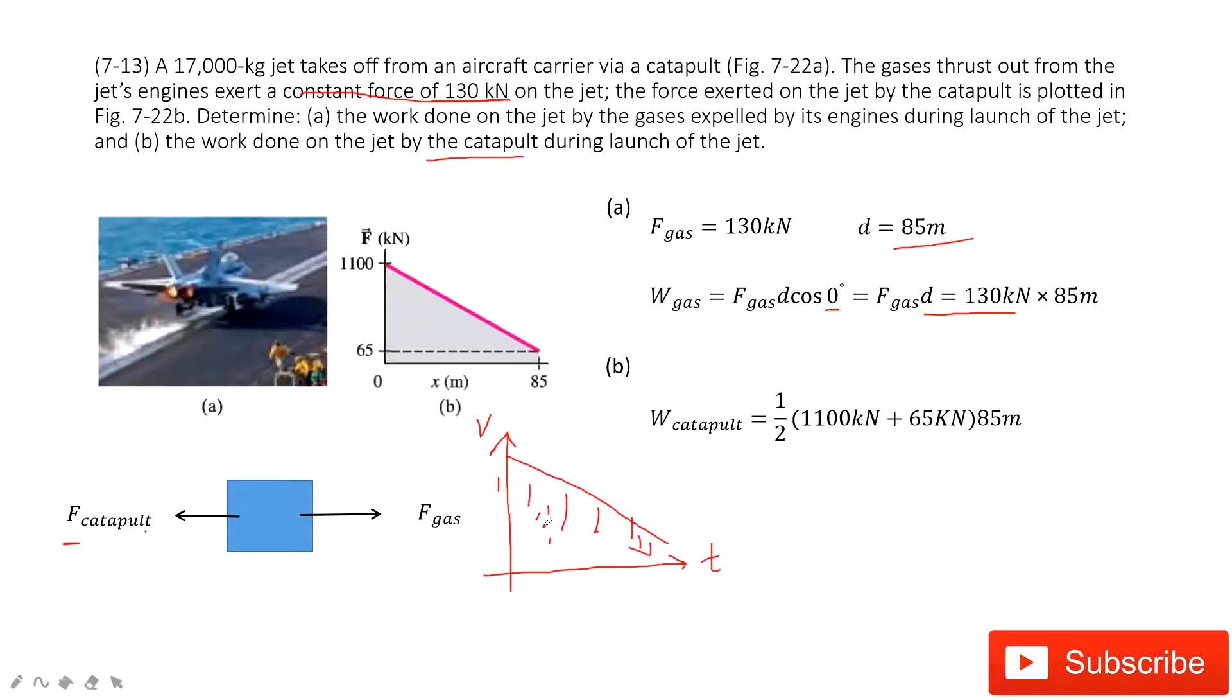Normally, we have V times t equals the displacement. But if the V keeps changing, we see the displacement is the area under the line. So very similarly, the work is the force times the distance.